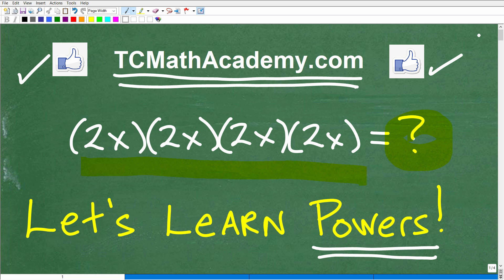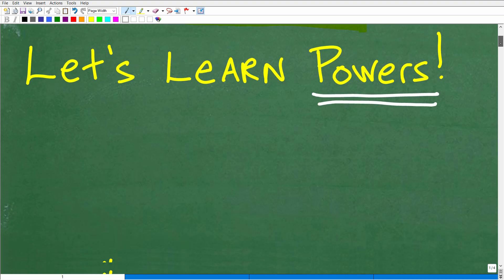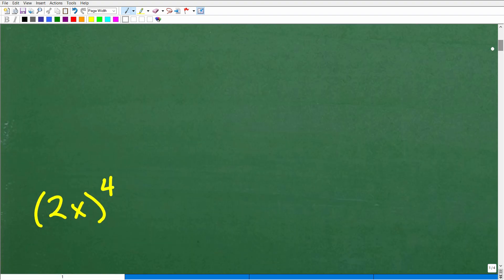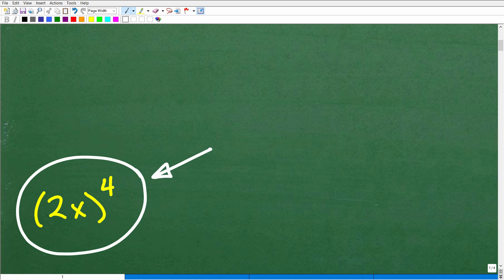Okay, so let's go ahead and take a look at the answer here. We have 2x times 2x times 2x times 2x. How can we write this as a power? Well, let's go ahead and take a look at the answer right now. Now, we can write this as 2x to the fourth power. So, that is the answer.